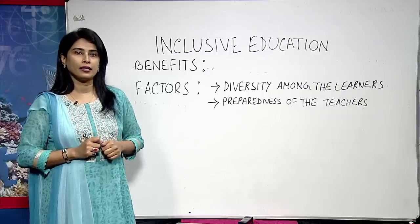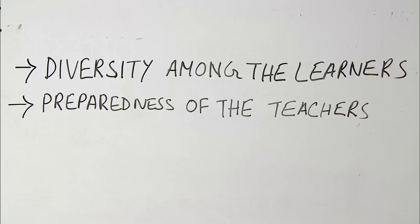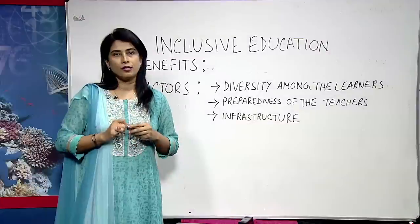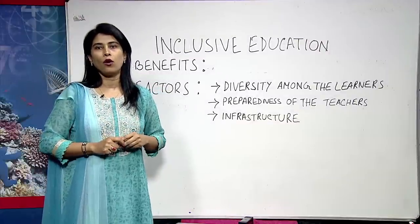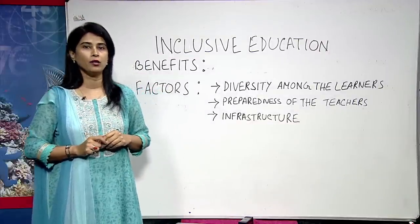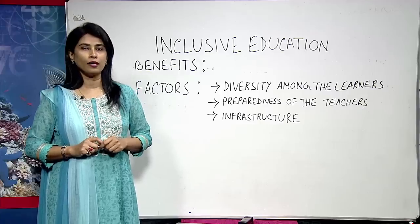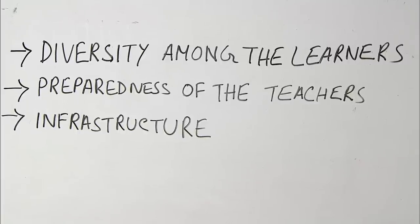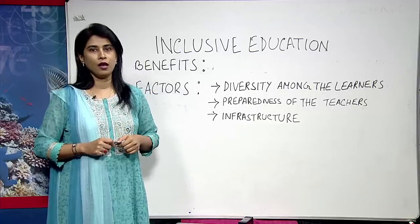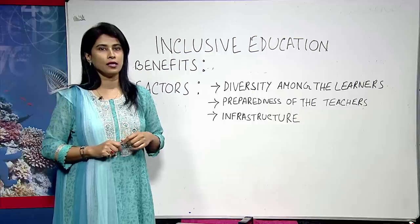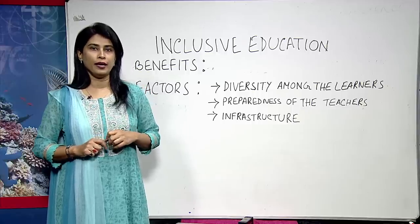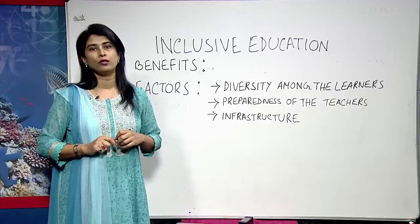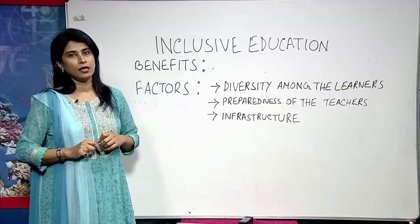The next important factor is infrastructure. The location, space and arrangement of a classroom are essential factors to help inclusive education. Most schools in our country are devoid of basic facilities suitable for learning. The location away from noise, rooms with proper ventilation, space for free movement inside and outside the classroom, grounds to play and provision for other co-curricular activities are very essential to support inclusive education.